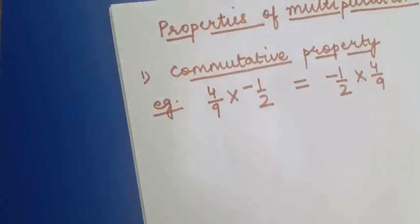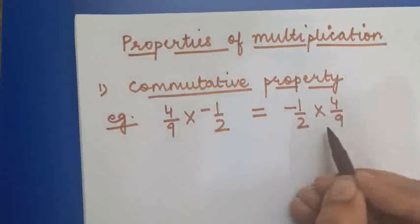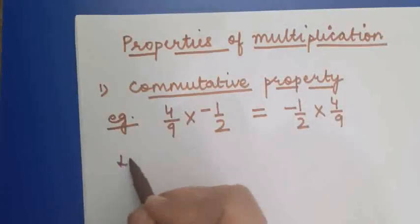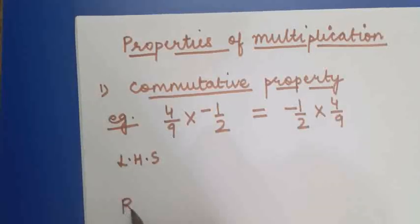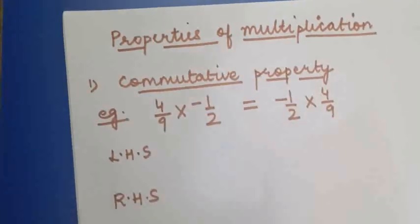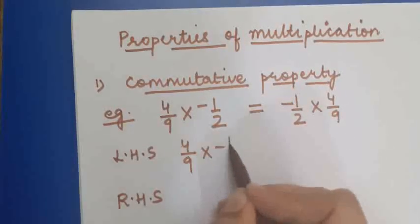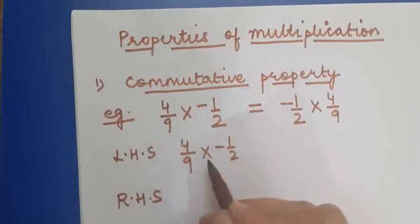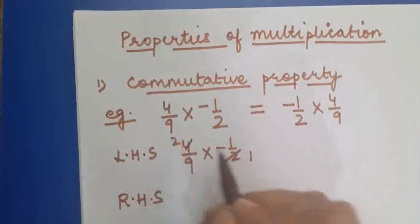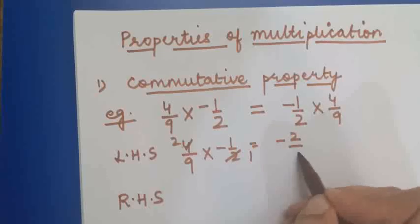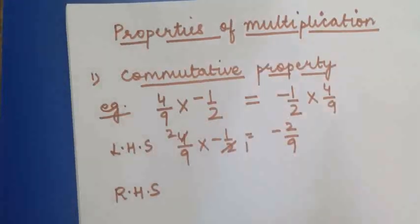We can verify the property by solving both the LHS side and the RHS side. The LHS side here is 4 upon 9 into minus 1 upon 2. Solving it: two 2s are 4, so that is equal to minus 2 upon 9. You are getting the result minus 2 upon 9 as the multiplication of these two.